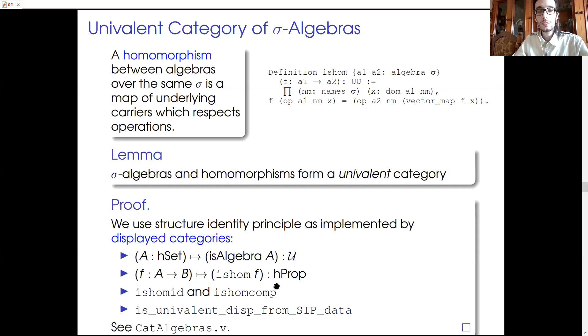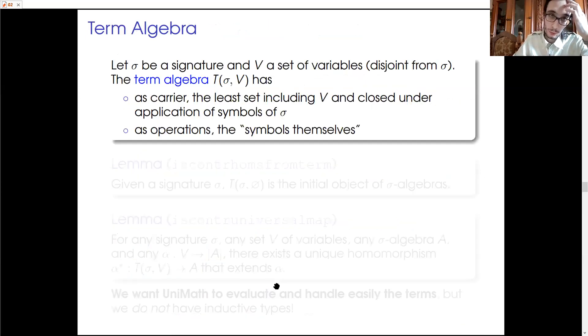So, things get a bit more hairy when we move to terms, because the set of terms over a set of variables is defined by induction as the least set extending V, the set of variables, and that is closed under the application of symbols of σ, but we do not have inductive types in UniMath. Anyhow, we have been able to construct this set and we can also construct the term algebra over V that has this set as carrier and that assigns symbols to themselves.